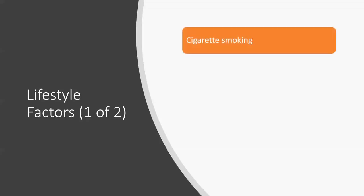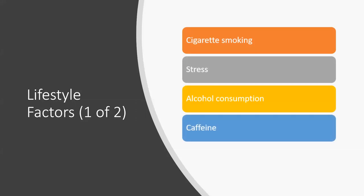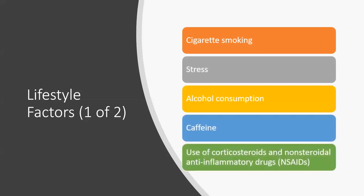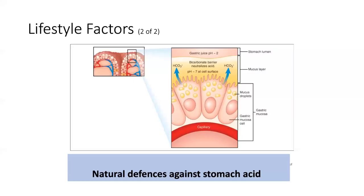Lifestyle factors like cigarette smoking, stress, alcohol consumption, excessive caffeine consumption, use of corticosteroids, and non-steroidal anti-inflammatory drugs (NSAIDs) are among the factors for causing peptic ulcer disorder. The natural defenses against stomach acid include bicarbonates, which help neutralize the acid in the body. We must be watchful of all these risk factors to avoid getting peptic ulcer disease.